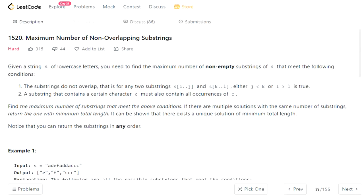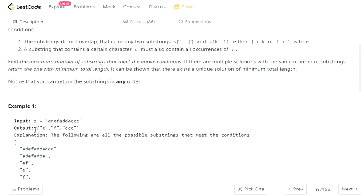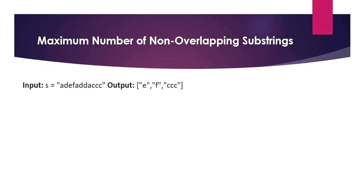Hello everyone. Today's problem is maximum number of non-overlapping substrings. The input given is a string and we have to return the maximum number of substrings that are non-overlapping. Let's understand the problem statement with this example. The other rule given is that a substring has to include all occurrences of a character.